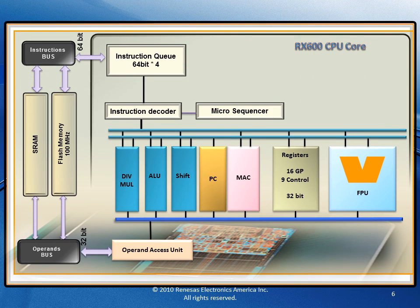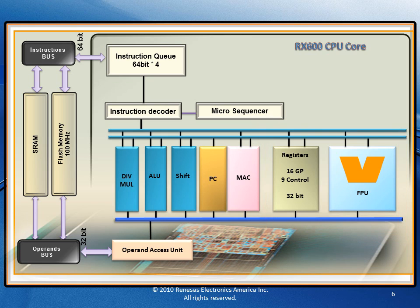In contrast, the RX FPU shares the general purpose registers with the CPU. As a result, the CPU operations are highly optimized. An example here shows how the floating point unit takes both operands from the general purpose registers, sending the result back to the general purpose registers. The floating point unit performs this operation without any outside data transfer.